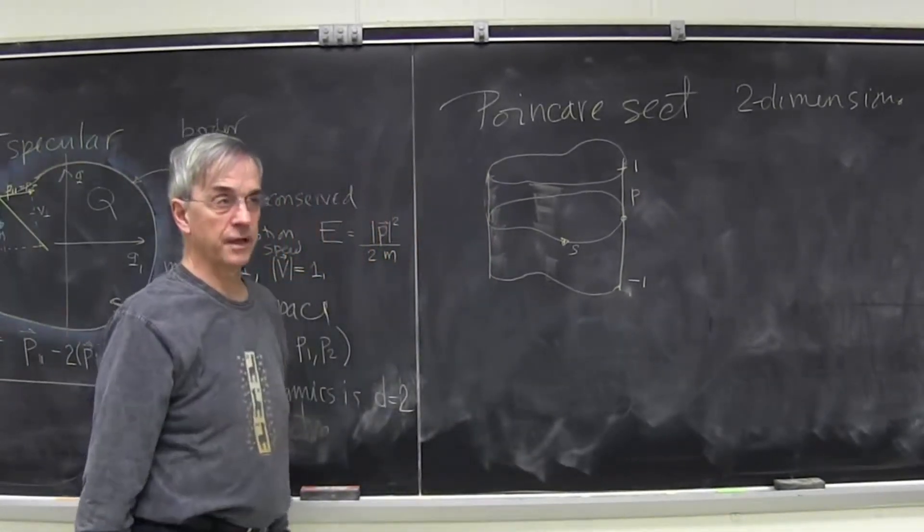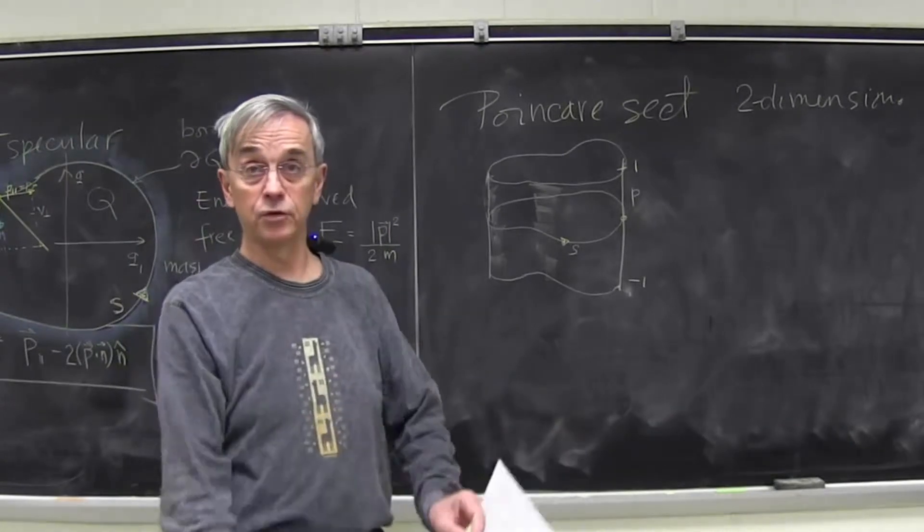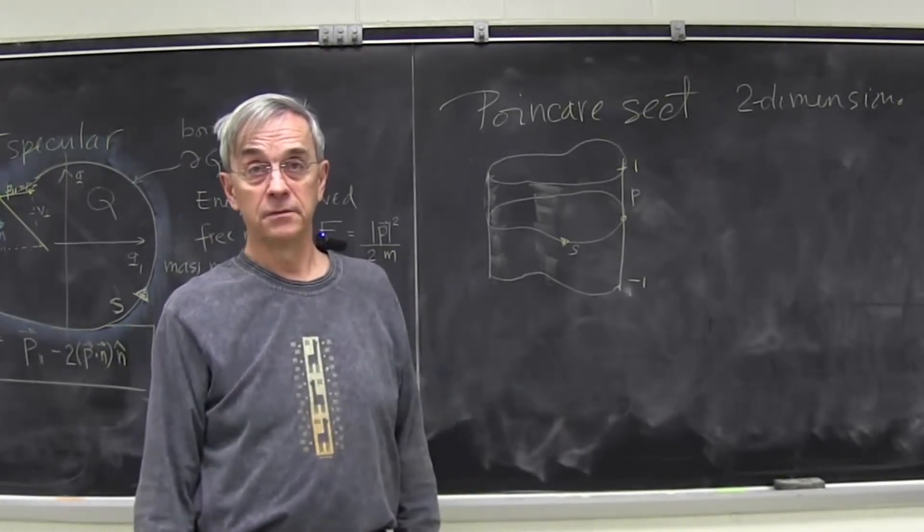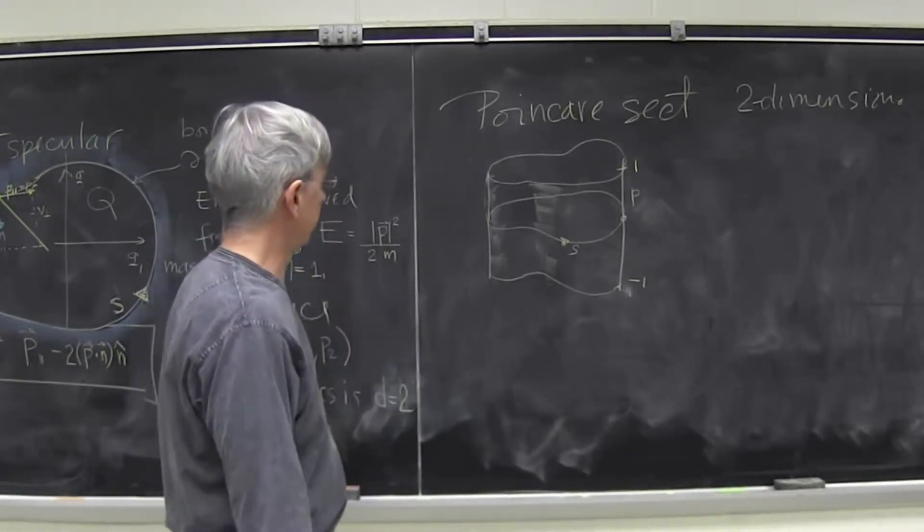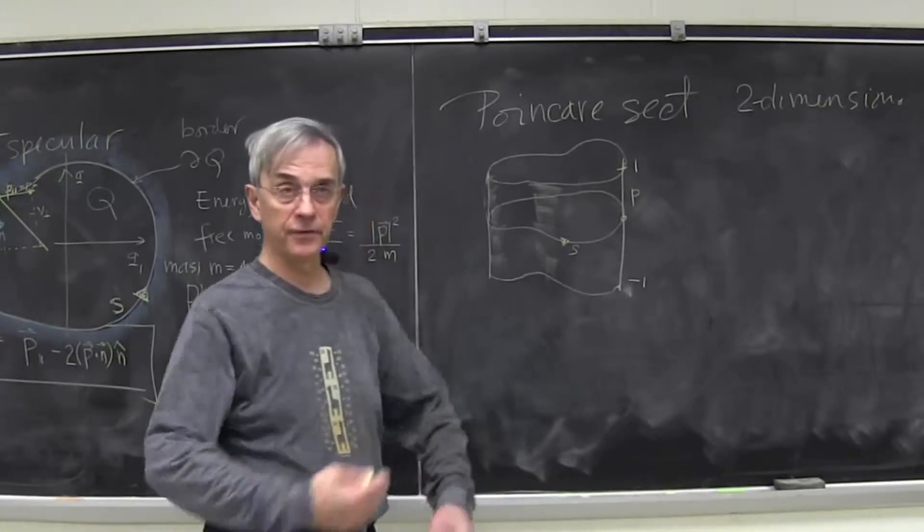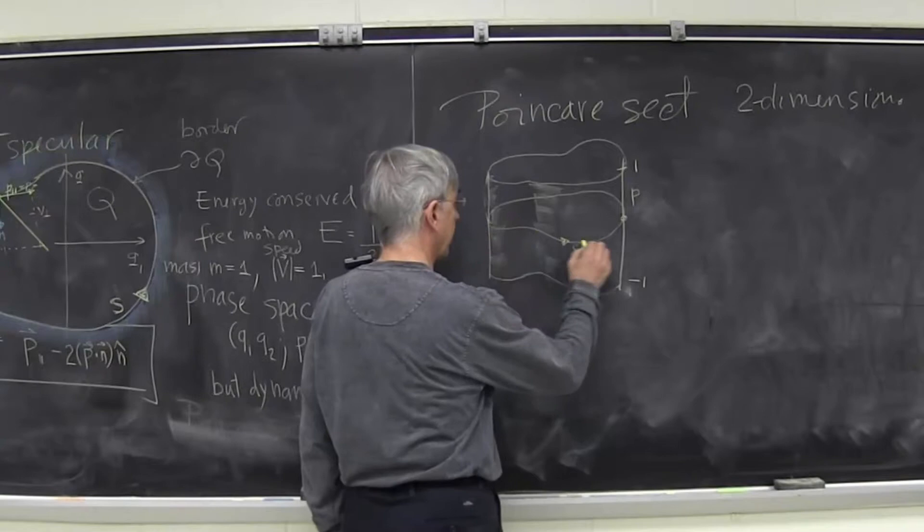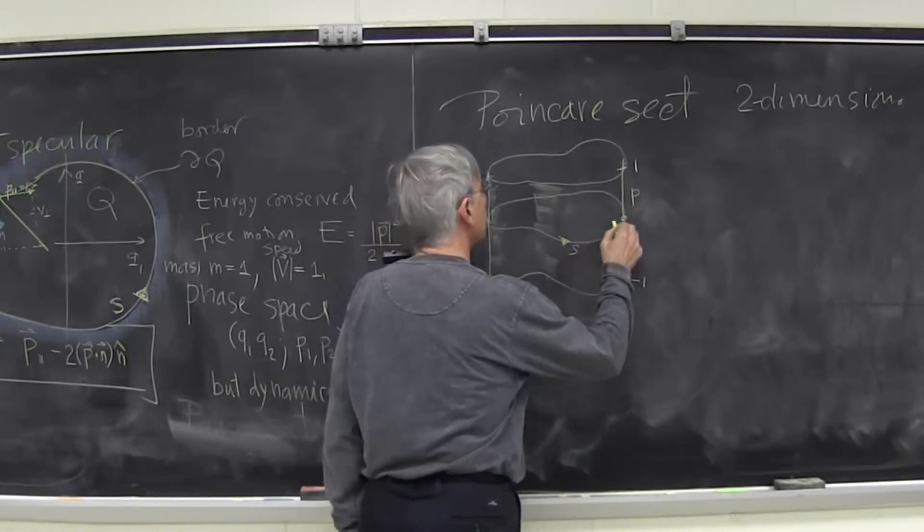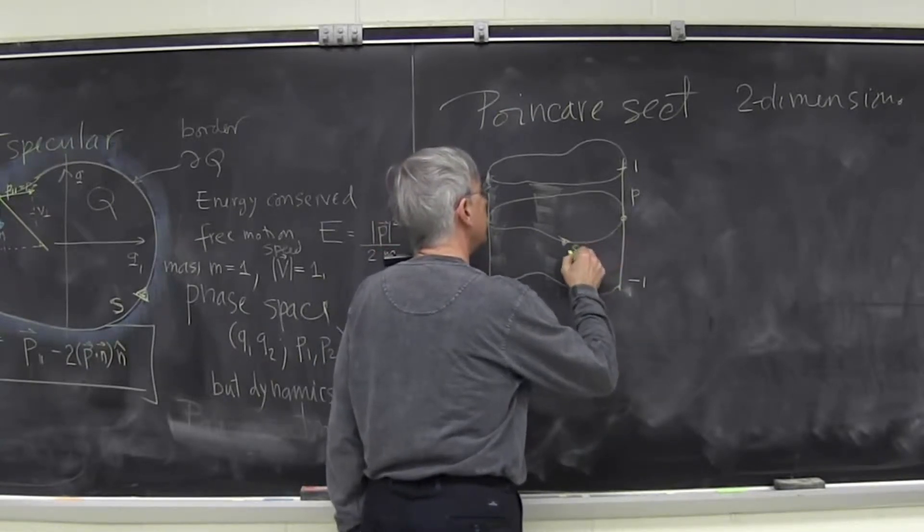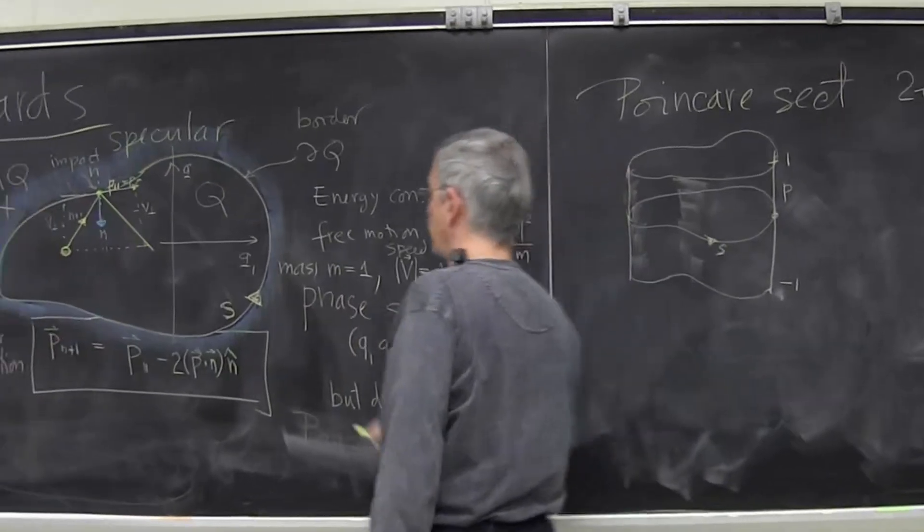So in this case, Poincare section is a connected two-dimensional, you could make it a cylinder if you want to draw it, in which one direction you move, you measure the length, meaning where you are.